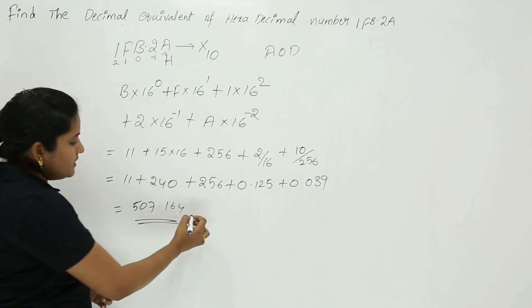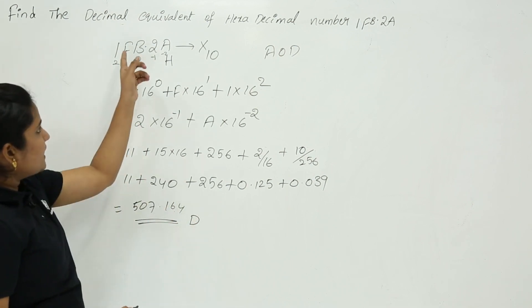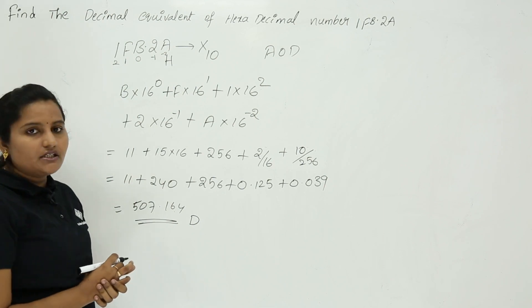So this is the equivalent decimal number for the given hexadecimal number 1FB.2A.